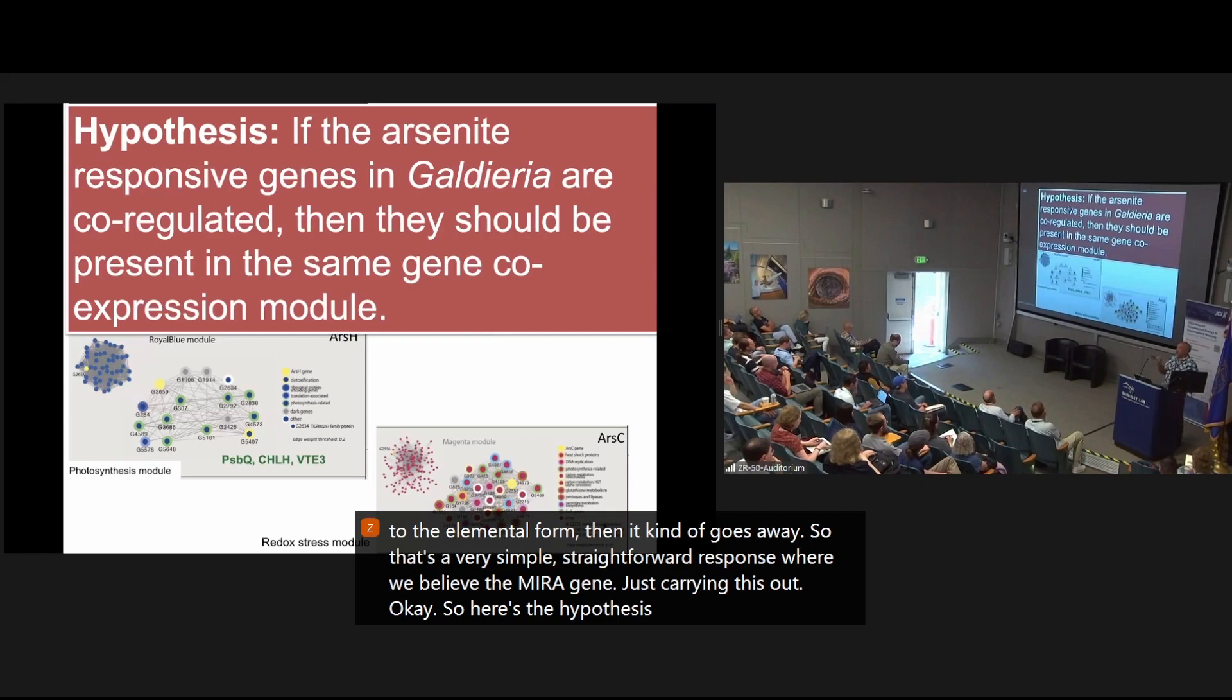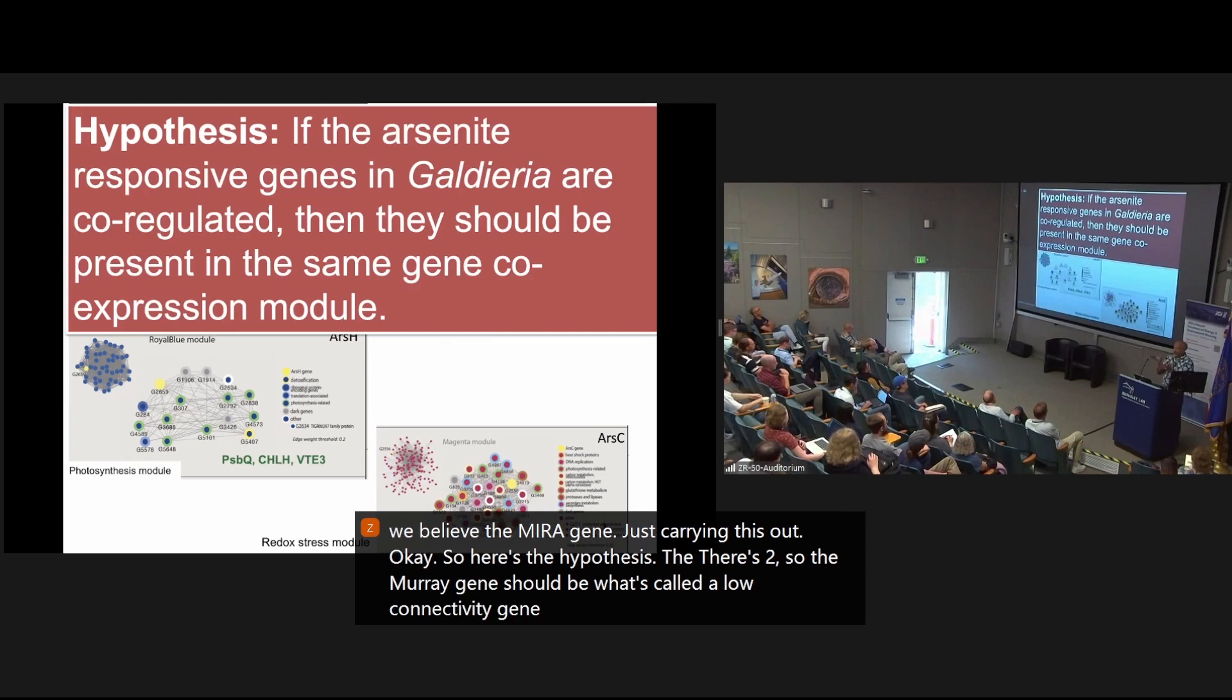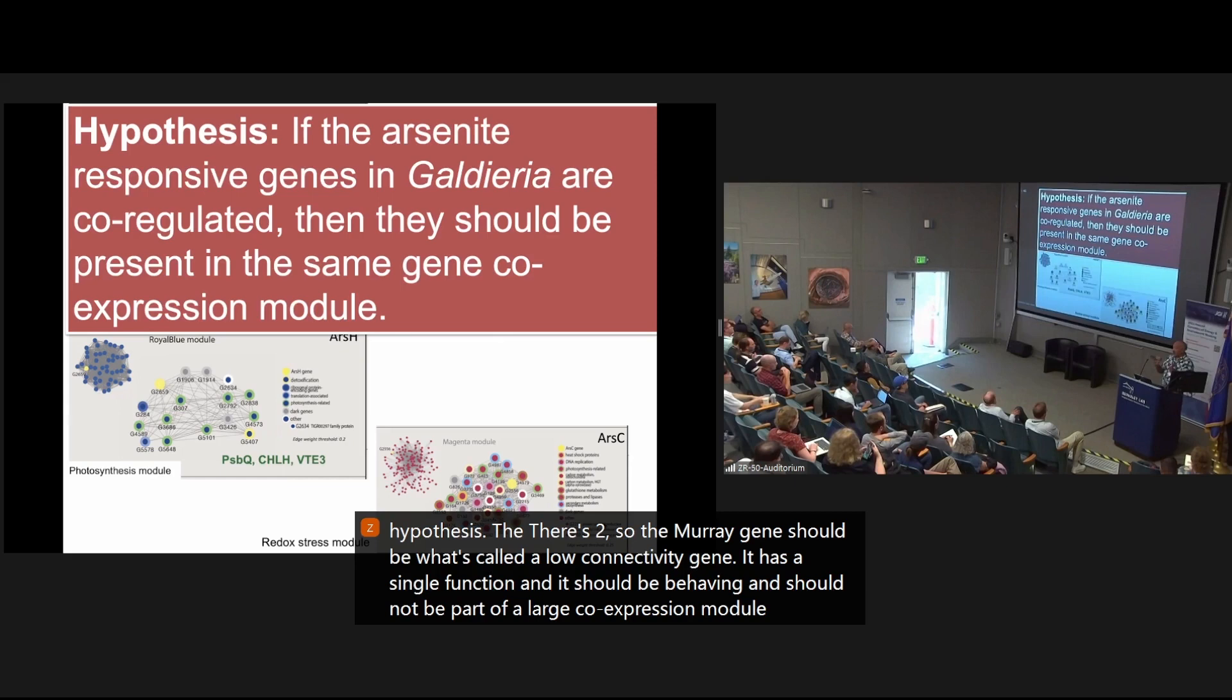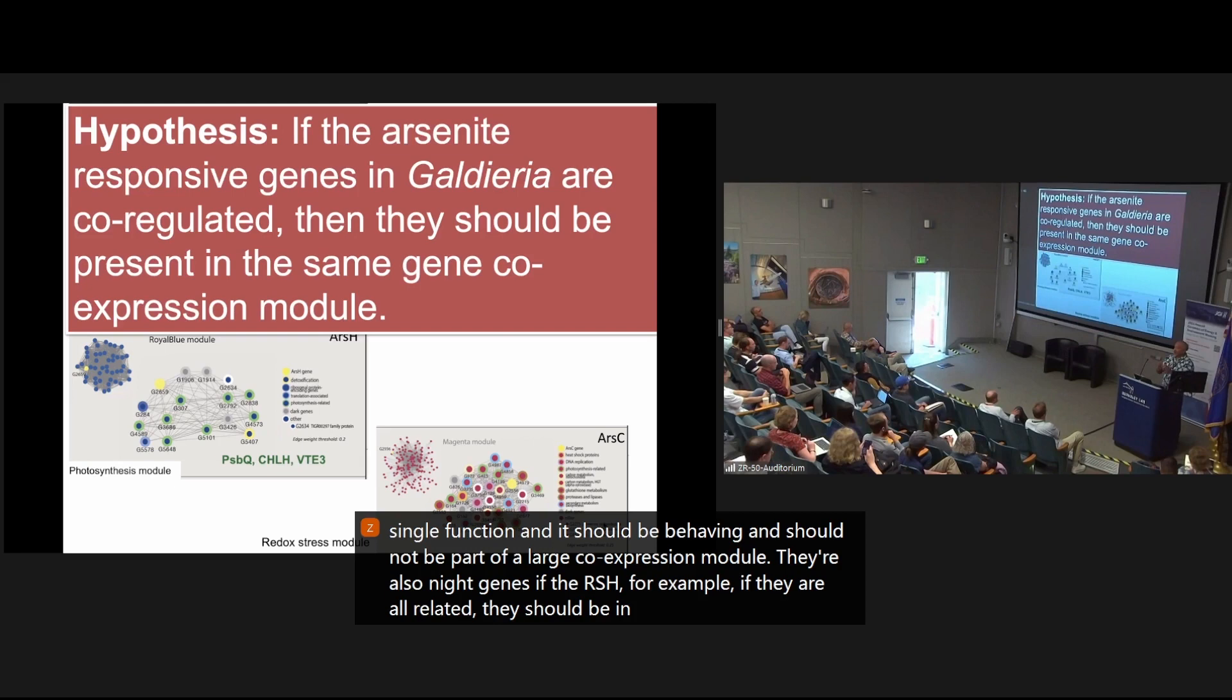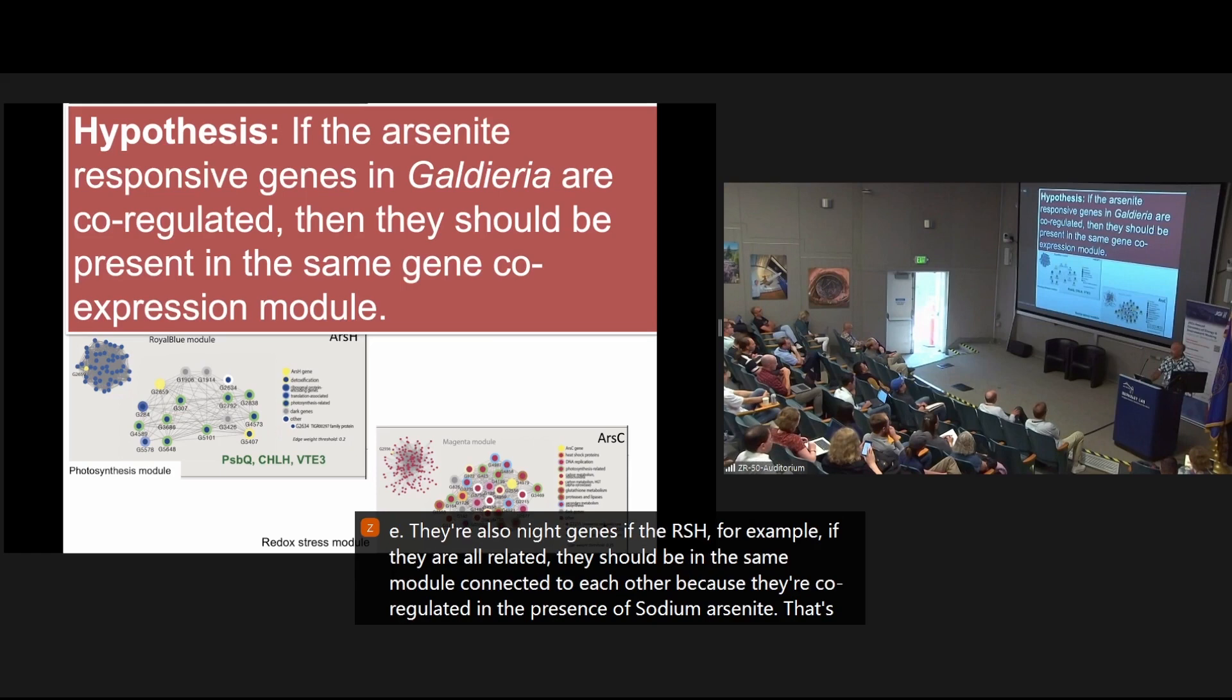The MerA gene should be what's called a low-connectivity gene. It has a single function, and it should not be part of a large co-expression module. The arsenite genes, the ArsH, for example, if they are all related, they should be in the same module, connected to each other, because they're co-regulated in the presence of sodium arsenate. That's the hypothesis you would put forth for these data, and it's exactly not the case.